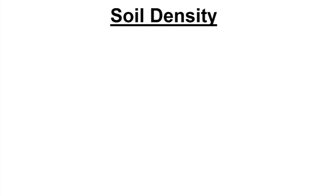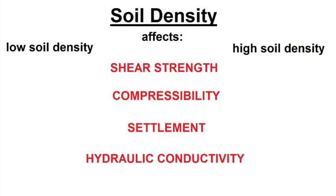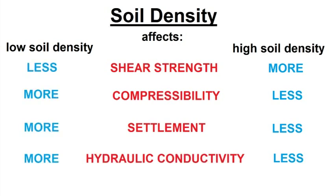Density is one of the controlling factors of soil as it governs attributes like shear strength, compressibility, settlement, and hydraulic conductivity. A more dense soil will have a higher shear strength, less settlement, less compressibility, and less hydraulic conductivity.